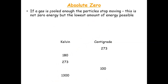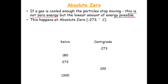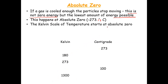At absolute zero, all particles stop moving — this is the lowest amount of energy possible. Absolute zero is minus 273.15 degrees Celsius. The Kelvin temperature scale starts at absolute zero, and one Kelvin equals one degree Celsius.